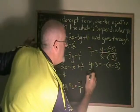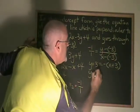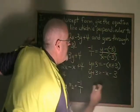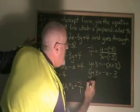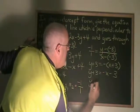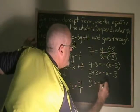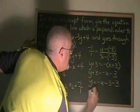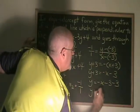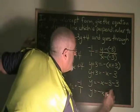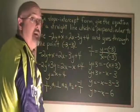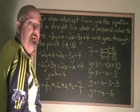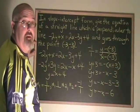Simplifying, y plus 3 equals negative x minus 3. Therefore y equals negative x minus 3 minus 3, which gives y equals negative x minus 6. This is slope-intercept form, so I have the answer to my question.